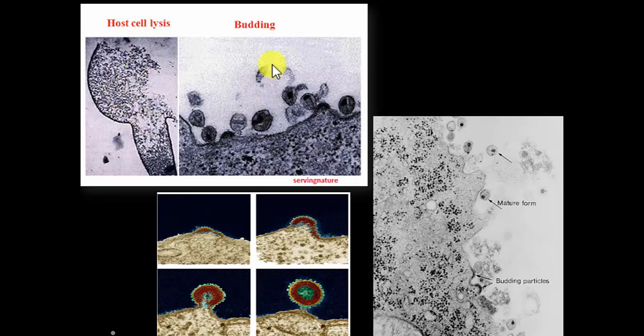The damage from budding comes from a slow depletion of the host cell membrane. Every time a single virus exits, it takes a little piece of the membrane with it. One virus entering can make up to a million copies of itself — different viruses have different rates of replication. Every time a little piece of membrane is taken, the host cell membrane starts to collapse and deteriorate literally from within. That's another way viruses cause damage — by depleting the membrane bit by bit.